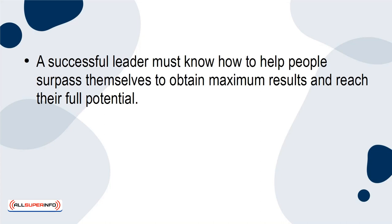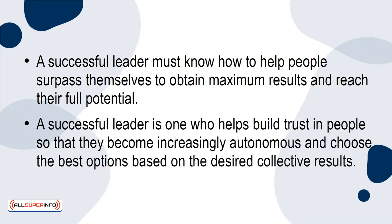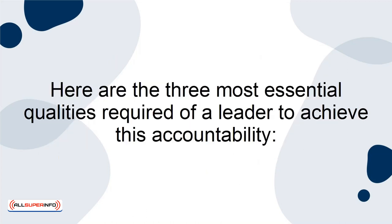A successful leader must know how to help people surpass themselves to obtain maximum results and reach their full potential. A successful leader is one who helps build trust in people so that they become increasingly autonomous and choose the best options based on the desired collective results. Here are the three most essential qualities required of a leader to achieve this accountability.